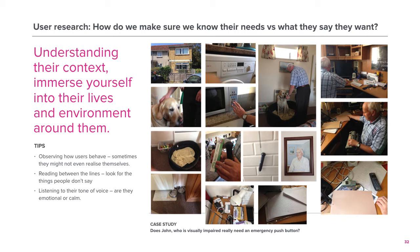The assumed solution was to design a button to help John get help in case of emergency. After visiting his environment, his home, we saw that he already had a system for organising his life. We quickly realised that the emergency button would not be the right solution, as John can just as easily find and use his phone as he could a new emergency button. In this observation research, we managed to save the government from investing in the wrong solution.